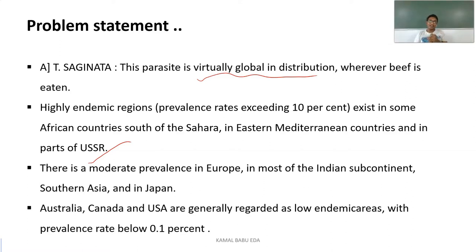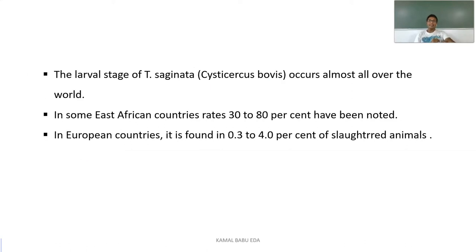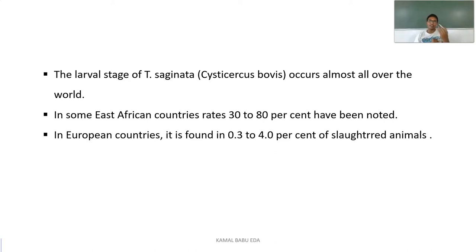The larval stage of Taenia saginata, called Cysticercus bovis, occurs almost all over the world. In African countries, this larval stage is found in about 30 to 80 percent of slaughtered animals, whereas in European countries it is found in only 0.3 to 4 percent of slaughtered animals.